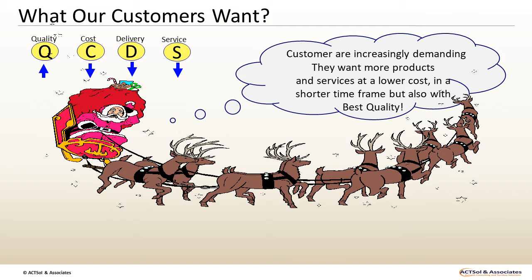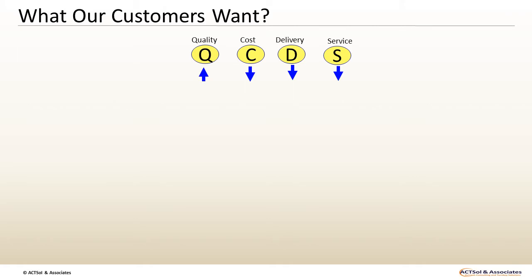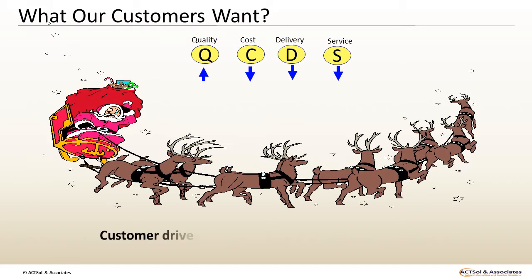We will learn what customers require from organizations. There are 4 key attributes which describe the needs of a customer. They are called QCDS: Quality, Cost, Delivery, and Service. You should always remember that a customer drives the process.